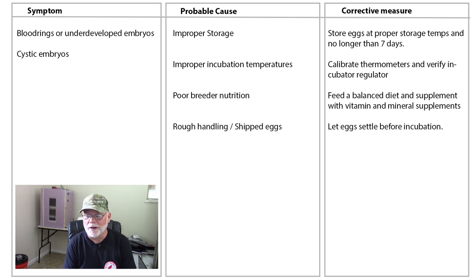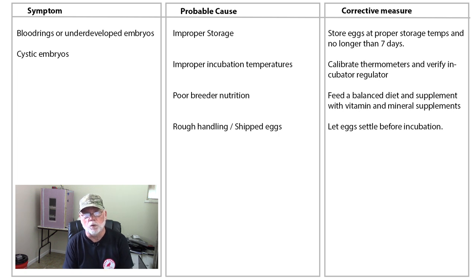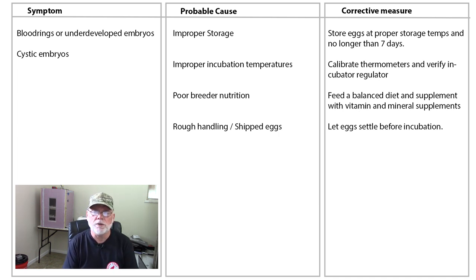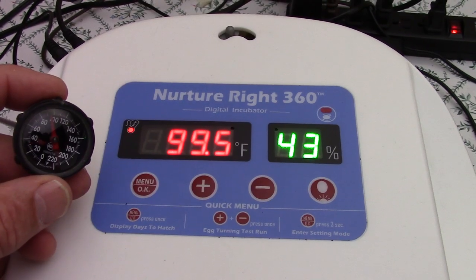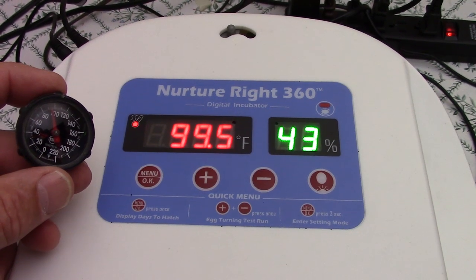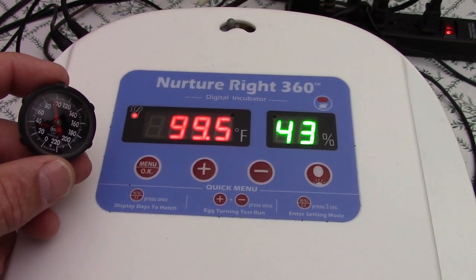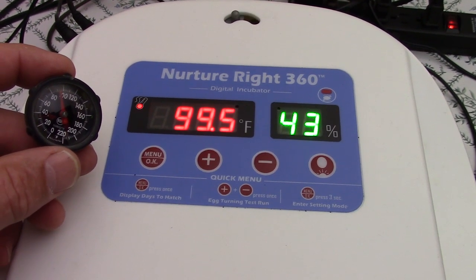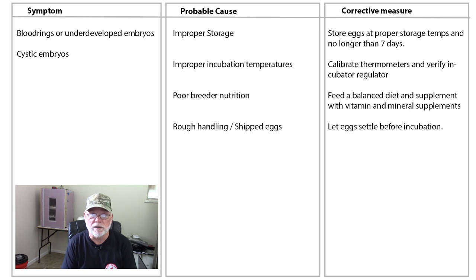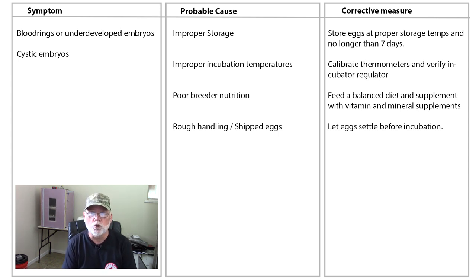Improper incubation temperatures — if your incubator is a little too warm or too cool you could run into issues with your embryos dying. You need to calibrate your thermometers and verify that the regulator in your incubator is actually correct. If you set your incubation temperature to 99.5 degrees but your thermometers are reading 97 or 101, that can cause these issues. And again, back to improper storage — eggs need to be stored in a cool place, preferably between 55 and 68 degrees, and try not to store them for more than a week.